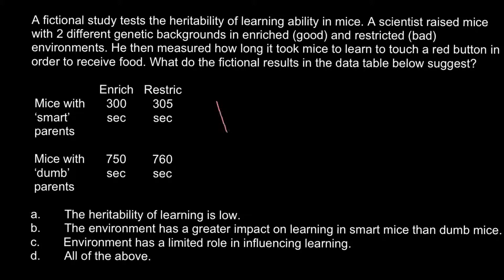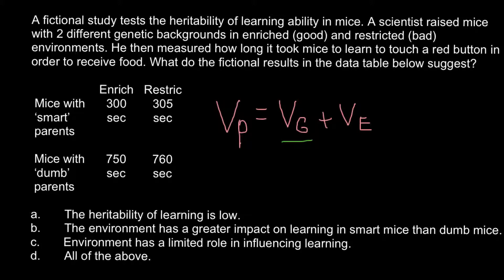Here is the formula for total phenotypic variance: total variance equals genetic variance plus variance due to environment. As you see, environment almost doesn't play a role here. We only see the difference between the mice due to genetics — different genetic backgrounds result in different times in order to find and press the button. But we almost do not see a change in results when we change the environment.